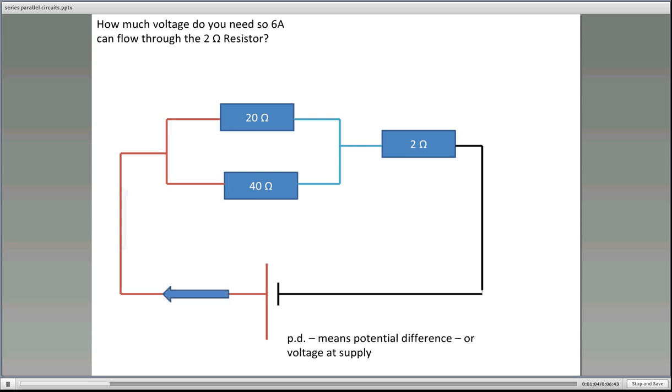So this is what we want to know. Here's the current leaving the supply. We'll get to that point there, it will split. Now it won't split equally because those resistors are not equal. They'll join together, then they'll flow back through the 2 ohm resistor. So we're expecting 6 amps to be flowing through the 2 ohm resistor and also through the supply until it gets to that point there.